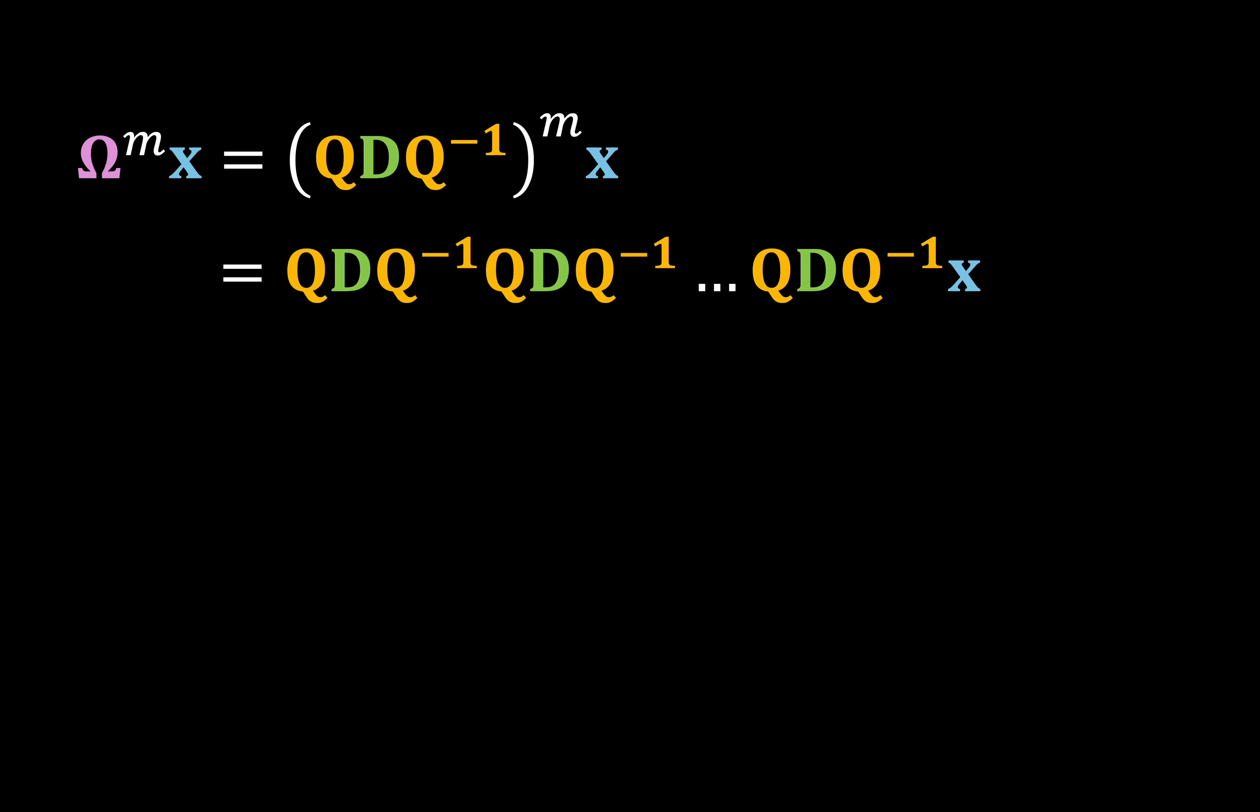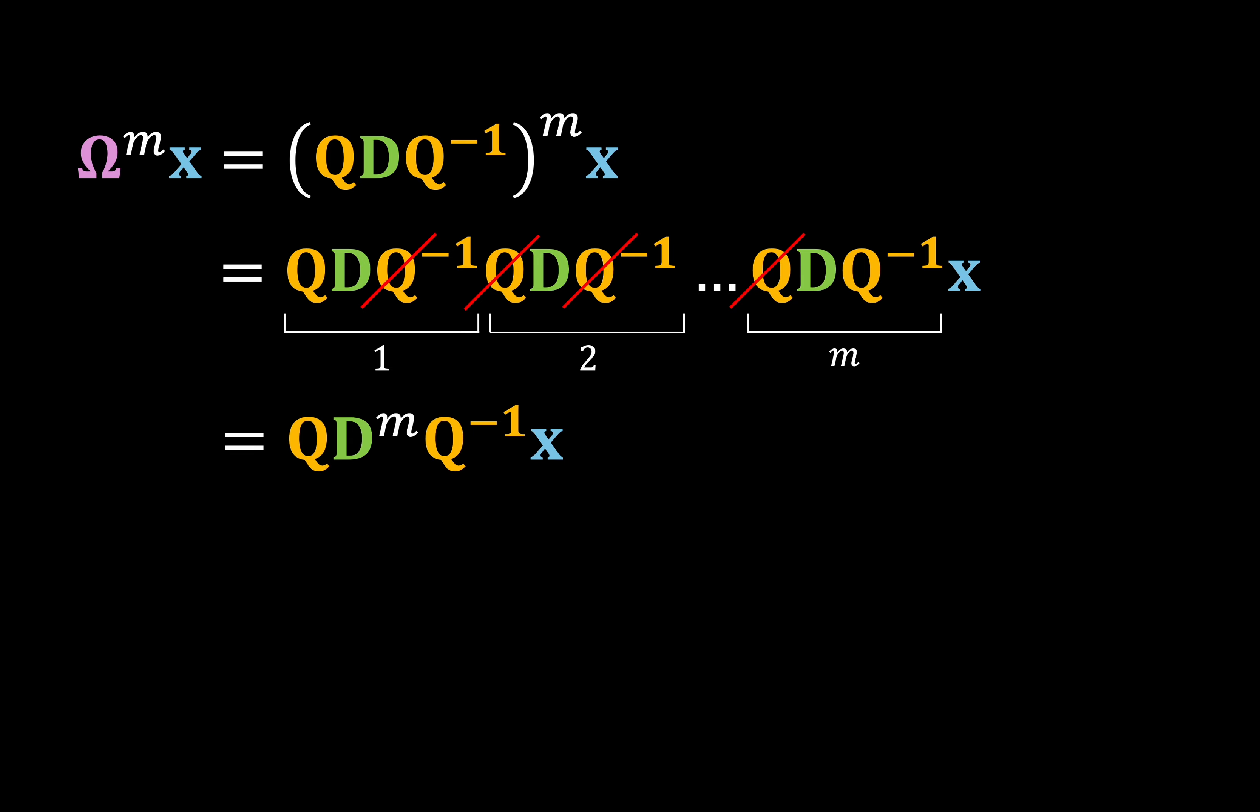Now if we keep repeating this multiplication, say m times, then most of our change of basis operations cancels out. And this makes sense, since all we're doing is flipping back and forth between bases. But our diagonal matrix is brought to the power of m, which means its elements are also brought to the power of m. So what we have is a change of basis followed by some scaling that could be incredibly large or incredibly small, depending on the eigenvalues, and then a change of basis back.